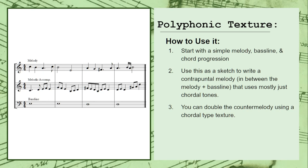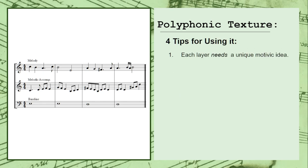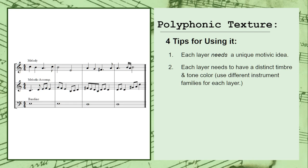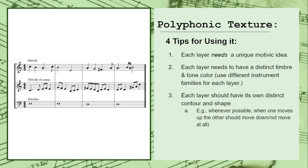The secret to what makes this texture so incredibly rich is your balance of contrasting material across each layer. There are a few tips to keep in mind. First, each layer needs a unique motific idea — your use of rhythm and pitch should help separate your melody, your melodic accompaniment, and your bass line into their own unique ideas and layers. Every layer also needs a distinct timbre or tone color. Additionally, each layer should have its own distinct contour and shape, meaning that whenever possible, if your melody is moving up, your counter melody should be moving down or not moving at all. Finally, similarly to the homophonic texture, each layer should not overlap in pitch during your sketching process, which will help keep your arrangement sounding clear and effective.